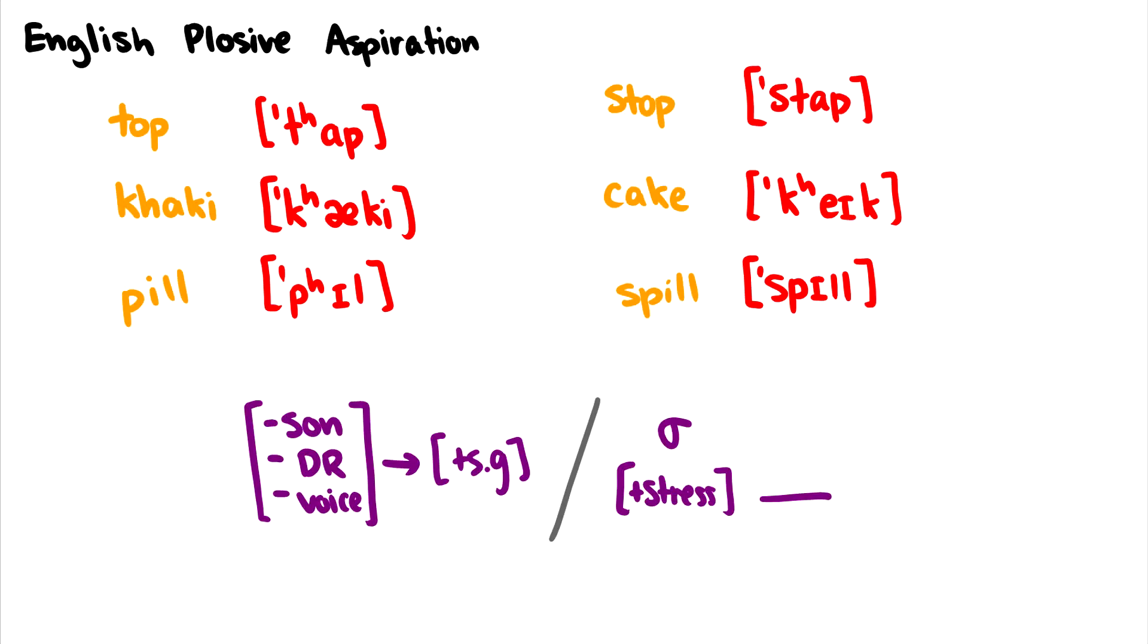The first one I want to talk about is something very common, which is English plosive aspiration. I have six words here, and I want to contrast the first two pair, the word top and stop. Notice, in the word top, the T has a puff of air coming out of your mouth when you say it. But in the word stop, you no longer have that puff of air.